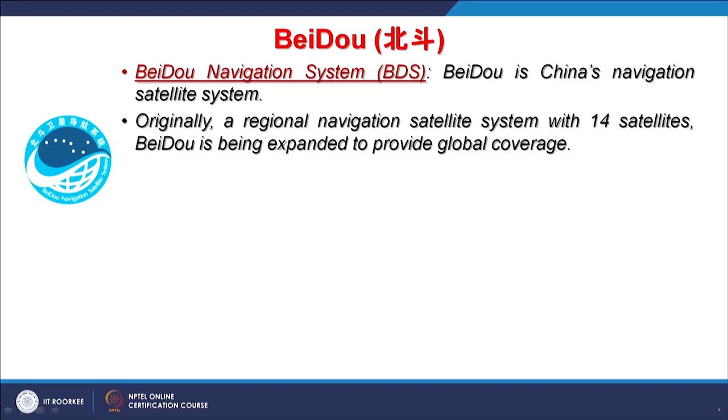Hello everyone and welcome to the 7th lecture of Global Navigation Satellite Systems and Applications. Today we are going to discuss a new system which is BeiDou, the Chinese Navigation Satellite System, also called BDS in short. BeiDou was developed later on after GPS (Navistar GPS of the US) and then GLONASS of the USSR. So a little later after that, the Chinese also started developing this system.